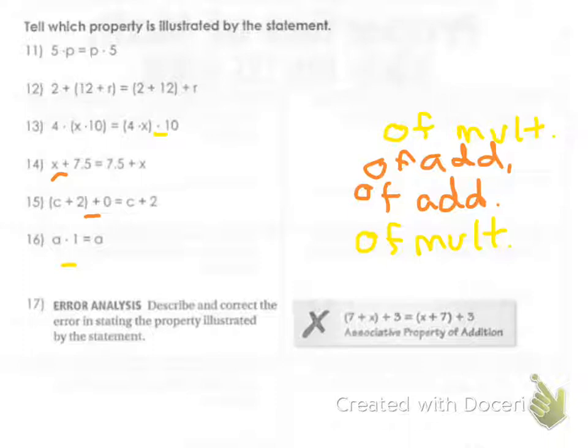Okay, so associative is just different groupings. So our groupings are different here. Different things are within the group, but the numbers are still in the same order. 4, x, and 10. 4, x, and 10. So that is... oh sorry, associative. And the word property should be there, but I can't fit it in there. So associative property of multiplication.